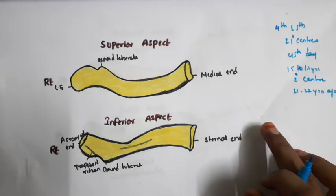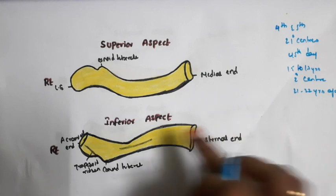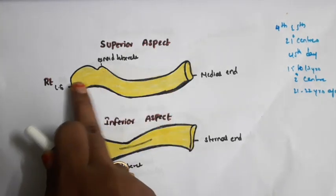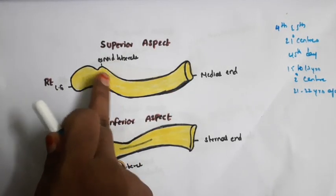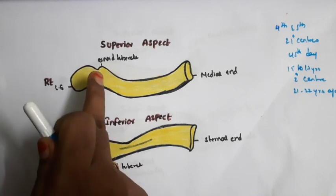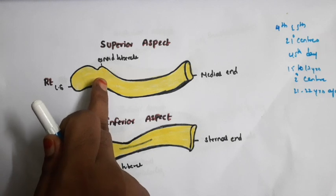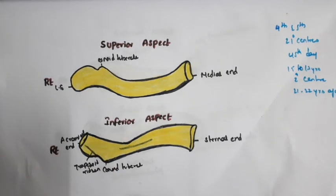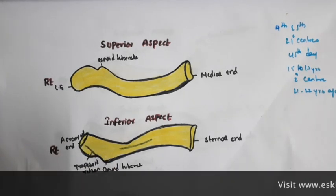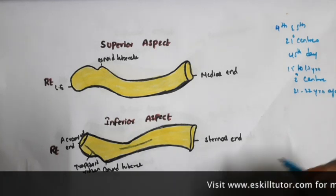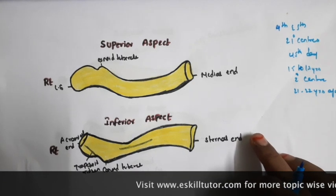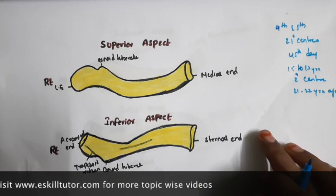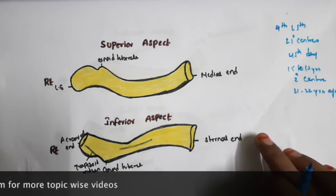Now we will see the clinical aspects. The first condition is fracture of the clavicle. This fracture mainly occurs at the junction between the medial two-third and lateral one-third — this is known as a weak point. These fractures are mainly caused by falling on an outstretched hand, and the lateral fragment displaces downwards due to the weight of the upper limb. The second clinical condition is cleidocranial dysostosis, in which there is absence or any impairment of the clavicle. In that condition the shoulders droop and come forwards towards the chest.